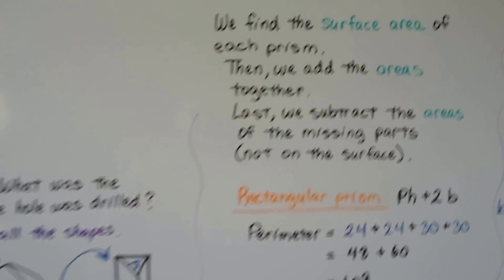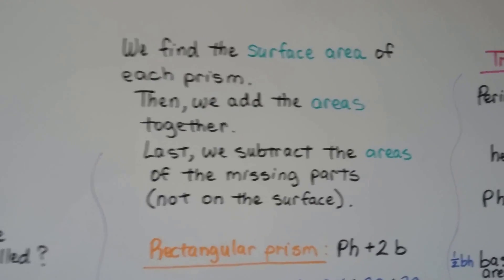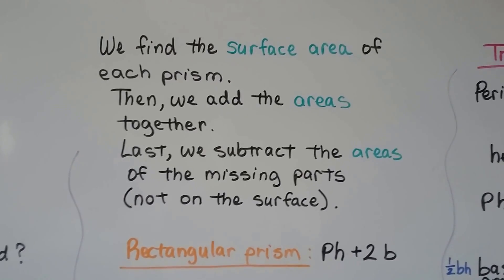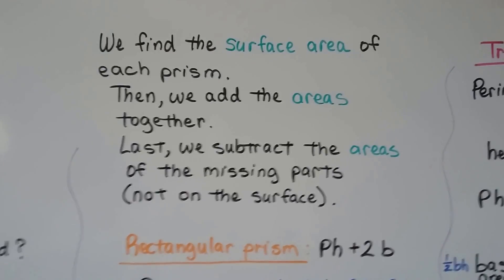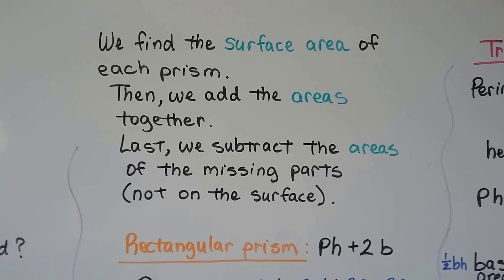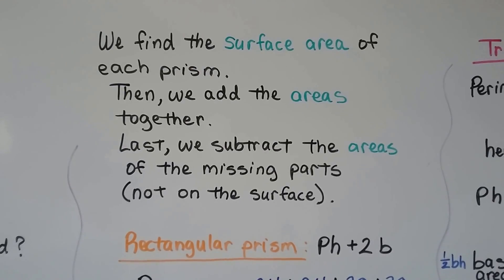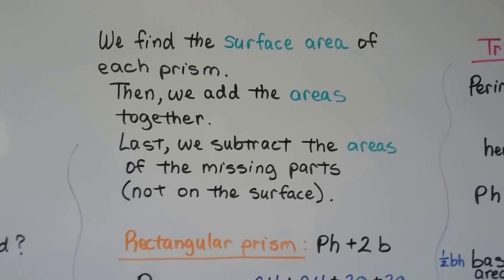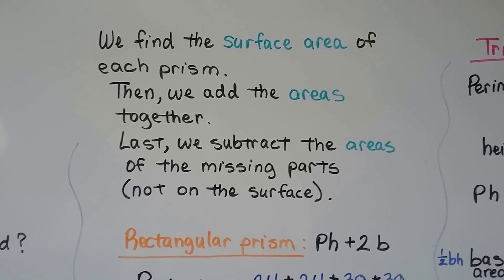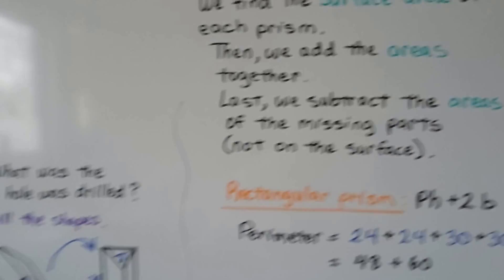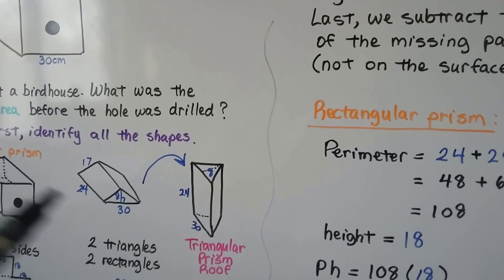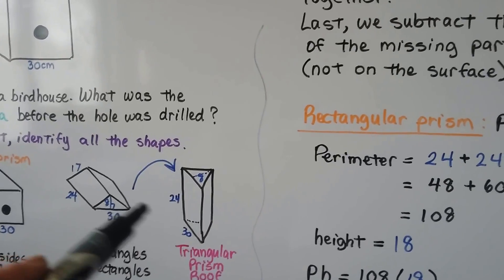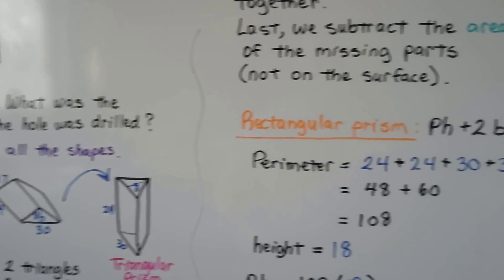We find the surface area of each prism, then we add the areas together. Last, we subtract the areas of the missing parts that are not on the surface — the top of the rectangular prism and the bottom of the triangular one.